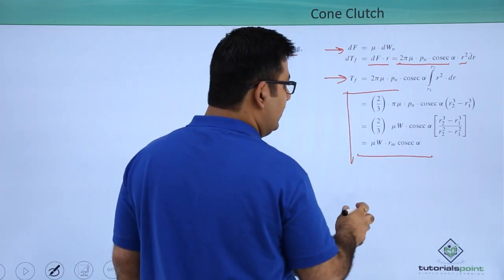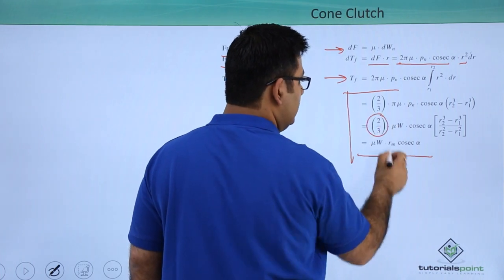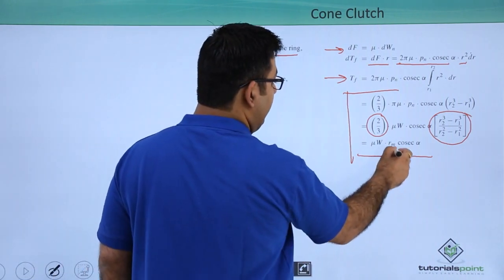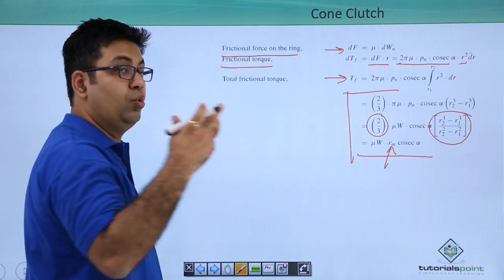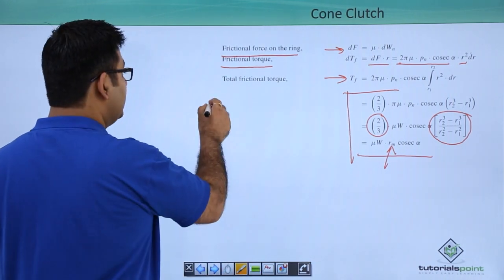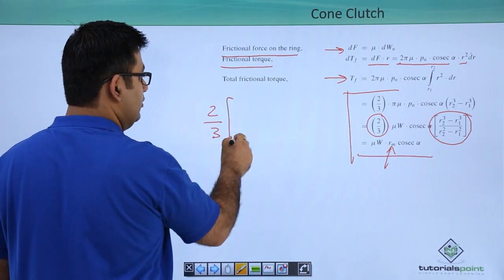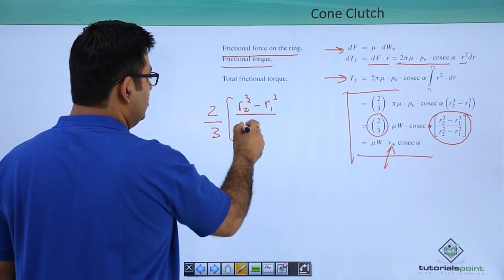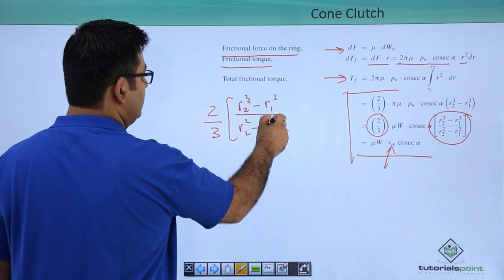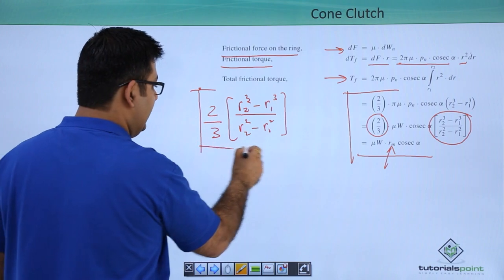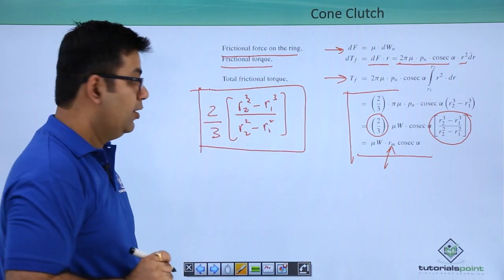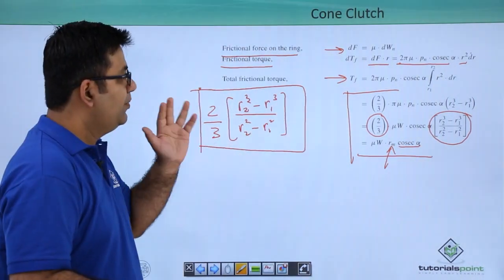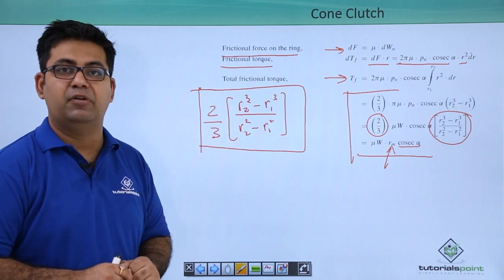Very similar to what we did in the single plate clutch, the integration would give you this part. If you combine 2 by 3 and this part, that gives you the mean radius. So mean radius for a cone clutch considering uniform pressure is 2 by 3 times (r2 cube minus r1 cube) by (r2 square minus r1 square). This is the same as the single plate clutch, and the only difference is that you have a cosecant alpha term extra in cone clutch.